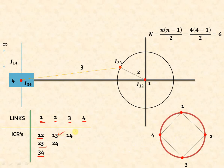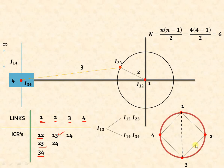To locate ICR 1-3, join it in the circle diagram with a dotted line. This forms two triangles: triangle 1-2-3 and triangle 1-4-3. For triangle 1-2-3, the combination to use is ICRs 1-2 and 2-3. For triangle 1-4-3, the combination is ICRs 1-4 and 3-4. These combinations tell us which lines to intersect to find ICR 1-3.